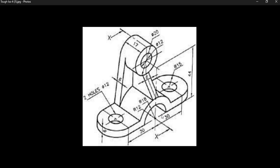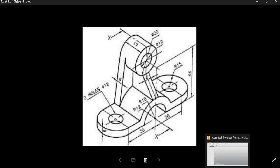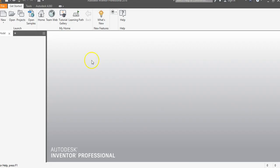We could also just choose to draw a center point rectangle that is going to be 90 by 6. Anytime you look at any one of these drawings, there are multiple ways to get started and multiple ways to actually complete this. What we're going to choose to do is a center point rectangle.